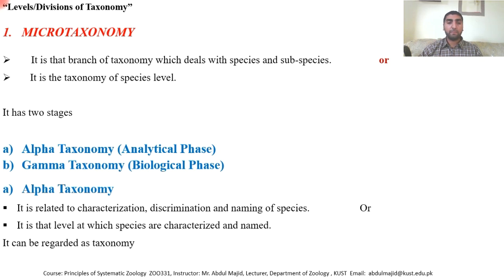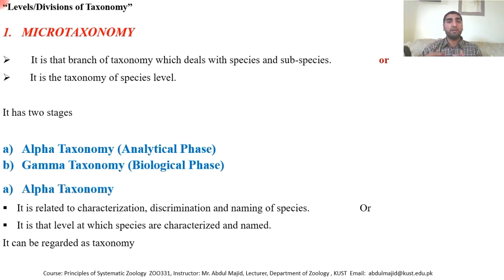Alpha taxonomy can be regarded as taxonomy itself, because taxonomy is the characterization, naming, and classifying of organisms into groups and subgroups.